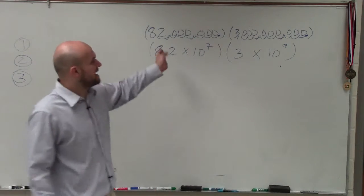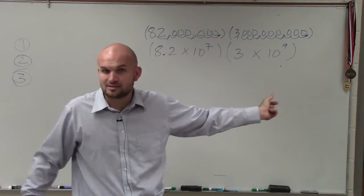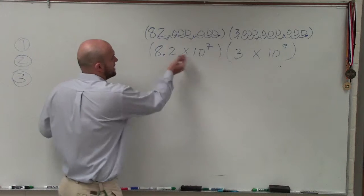So, counting all the zeros, which would be 16, correct? Then you just need to multiply 8.2 times 3.